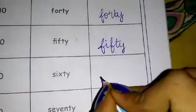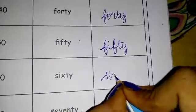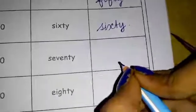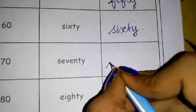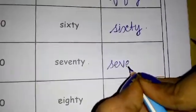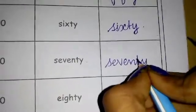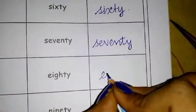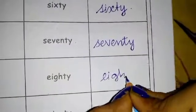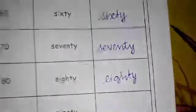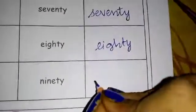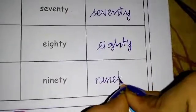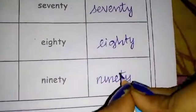60 — S-I-X-T-Y — 60. 70 — S-E-V-E-N-T-Y — 70. 80 — E-I-G-H-T-Y — 80. 90 — N-I-N-E-T-Y — 90.